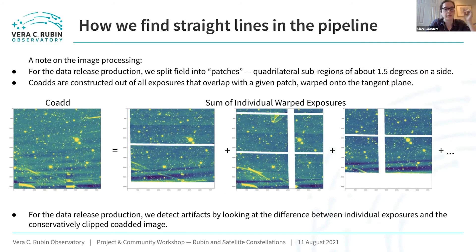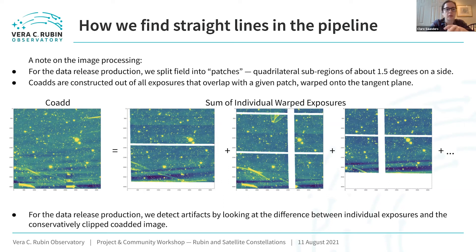Here's how we actually implement this in the pipeline. When talking about these coadds, we split the field of view into patches — sub-regions of about a degree and a half on the side — constructed by taking all exposures overlapping with that patch, warped onto the tangent plane. To detect artifacts, we take a very aggressively clipped coadd and then subtract that from each of the individual exposures overlapping with that patch. This difference image is what we actually use for detecting artifacts.